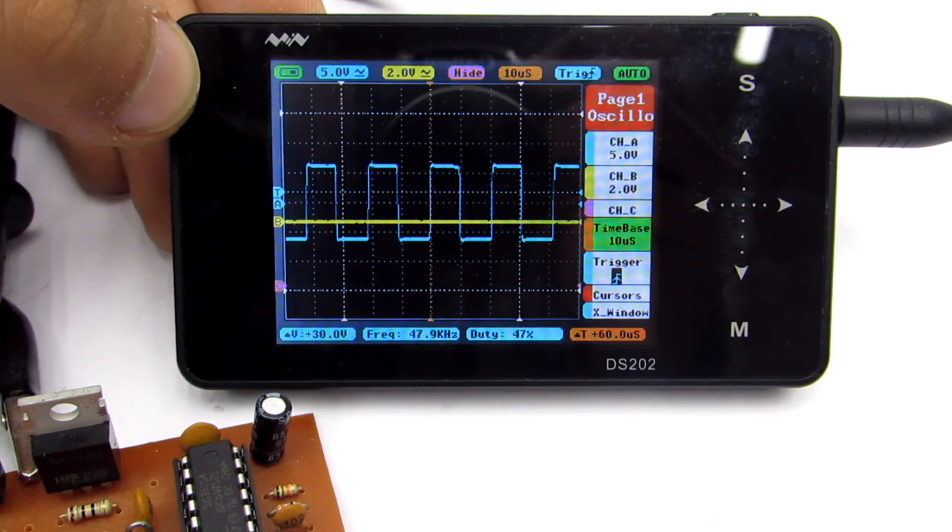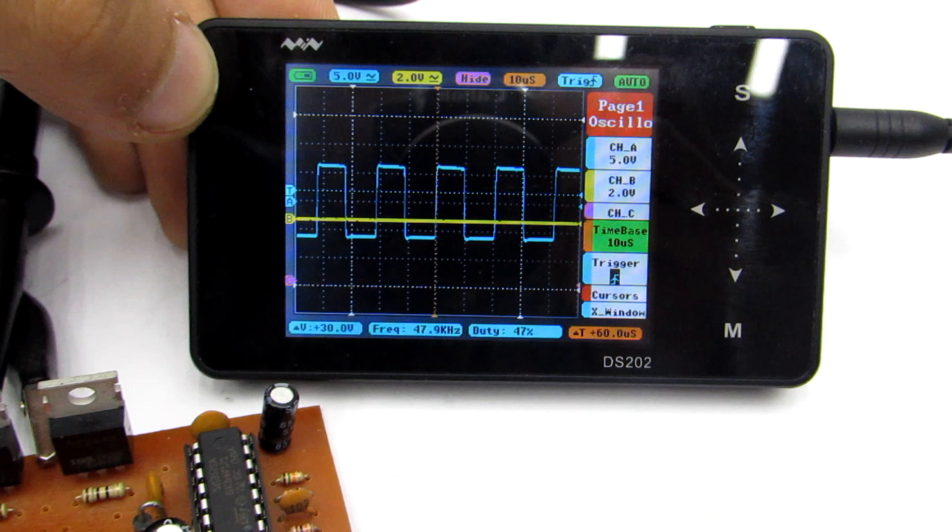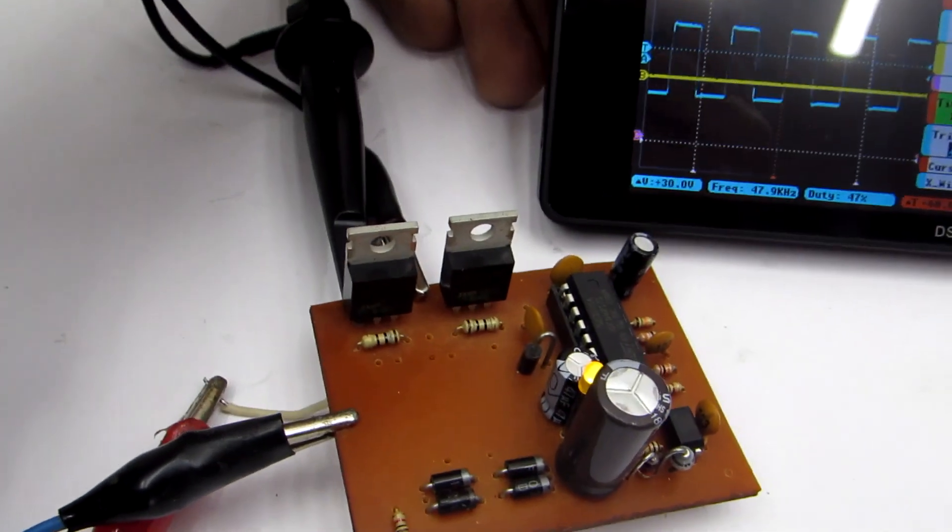The operating frequency of the chip with this layout is 47 to 50 kHz, depending on the component's tolerance.